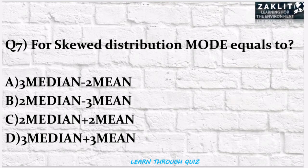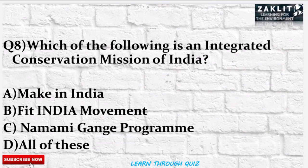The next question was: for a skewed distribution, the mode is equal to how much? The correct option is A — mode is equal to 3 median minus 2 mean in the case of a skewed distribution.